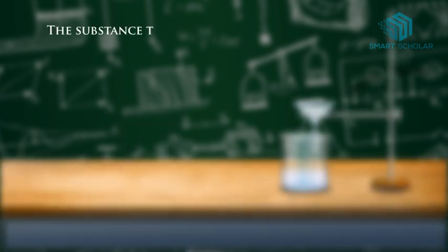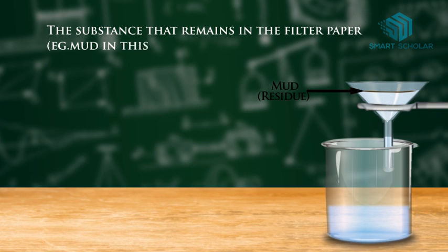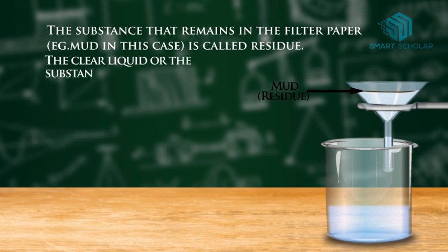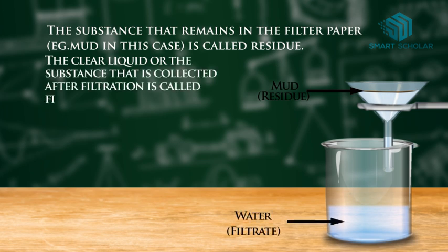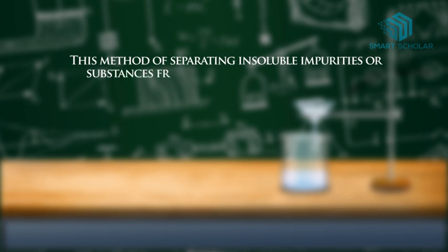The substance that remains in the filter paper is called residue. The clear liquid or the substance that is collected after filtration is called filtrate. This method of separating insoluble impurities or substances from a liquid is called filtration.